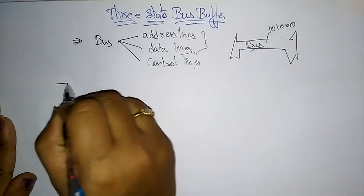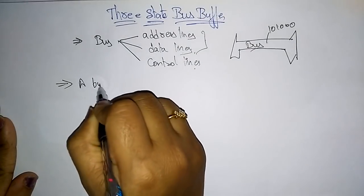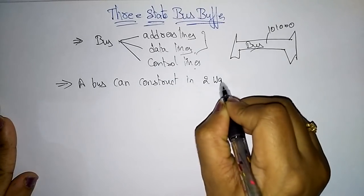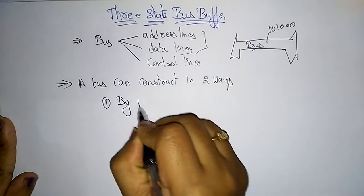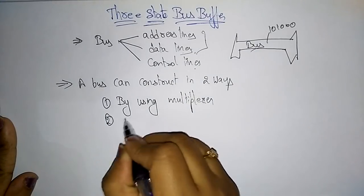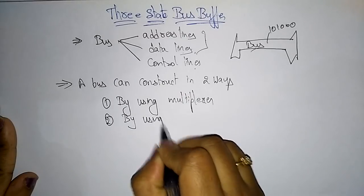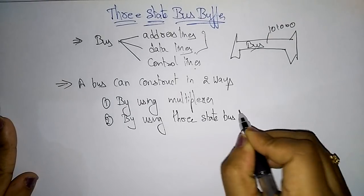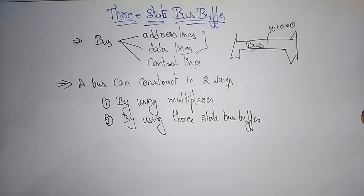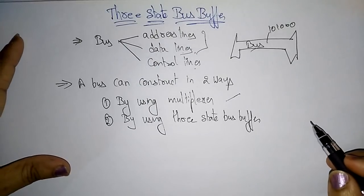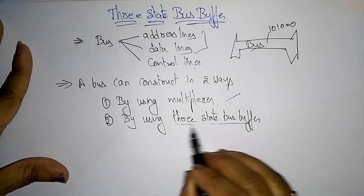A bus can be constructed in two ways: one is by using a multiplexer, and the other is by using a three-state bus buffer. With the help of a multiplexer or a three-state bus buffer, we can construct the bus. The method using the multiplexer is somewhat complex and very costly when compared to the three-state bus buffer.